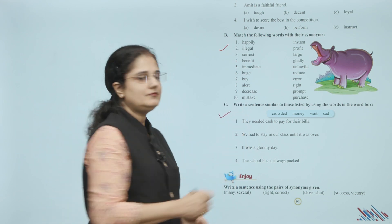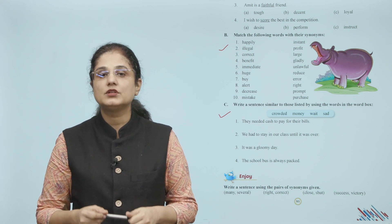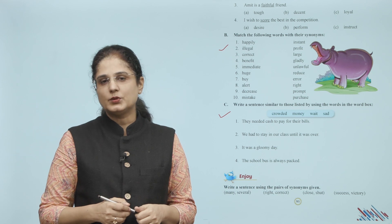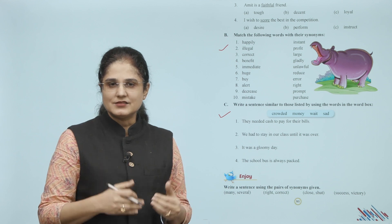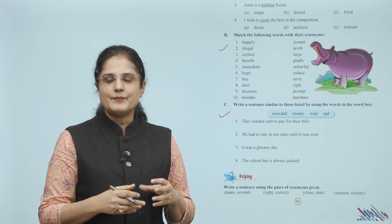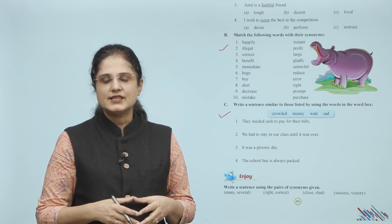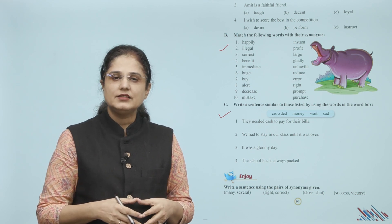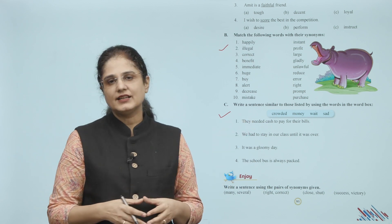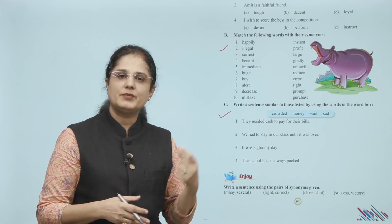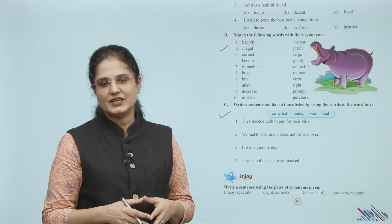Next, write a sentence similar to those listed by using the words in the word box. Word box mein aapko words diye gaye hain: crowded, money, weight, sad. Ab aapne kya karna hai? Jo sentences diye gaye hain, unme aapne kuch words ko in se exchange karna hai ya change karna hai. For example, the first one says, they needed cash to pay for their bills. Ab box mein jo word diya gaya hai — money — usko aap cash ki jagah pe replace kar sakte hain. Isi tarah se baaki sentences bhi aap karein.